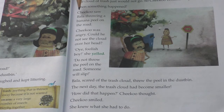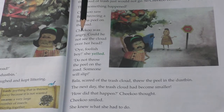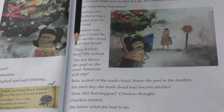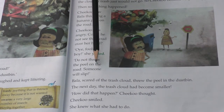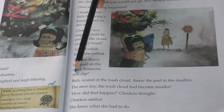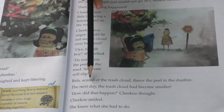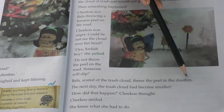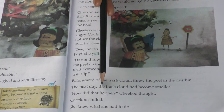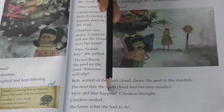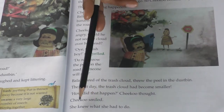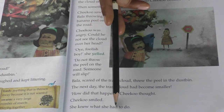Then something happened — Chiku saw Bala throwing a banana peel on the road. Chiku was angry. Could he not see the cloud over her head? 'Oh, foolish boy!' she yelled. 'Do not throw the peel on the road — someone will slip!' Bala, scared of the trash cloud, threw the peel in the dustbin. The next day the trash cloud had become smaller. How did that happen? Chiku thought. Chiku smiled — she knew what she had to do.